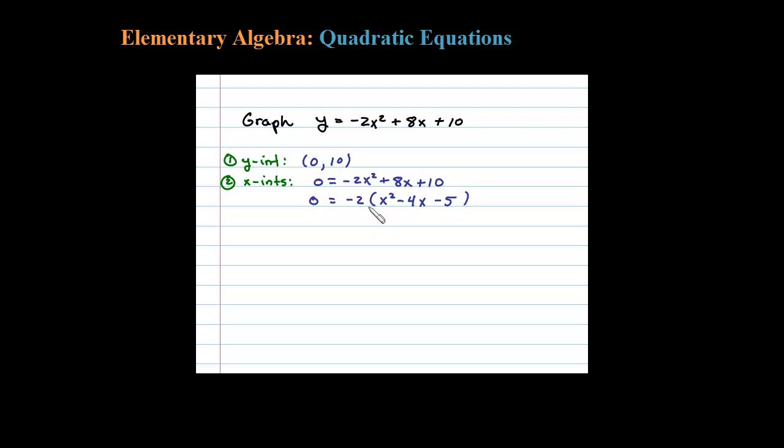So then factor what's left. If it doesn't factor, no big deal, use the quadratic formula. So here I'm going to factor 5 as 1 times 5. 1 and 5 adds up to negative 4 if the 5 is negative and the one is positive. Positive 1 times negative 5 is negative 5.